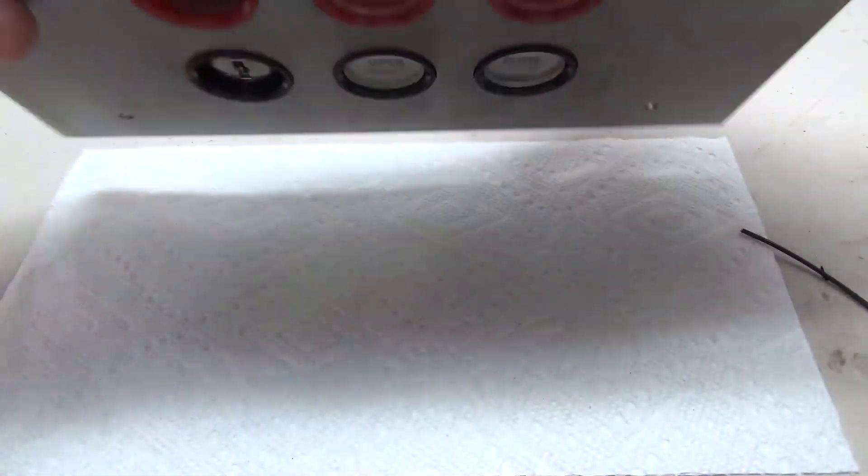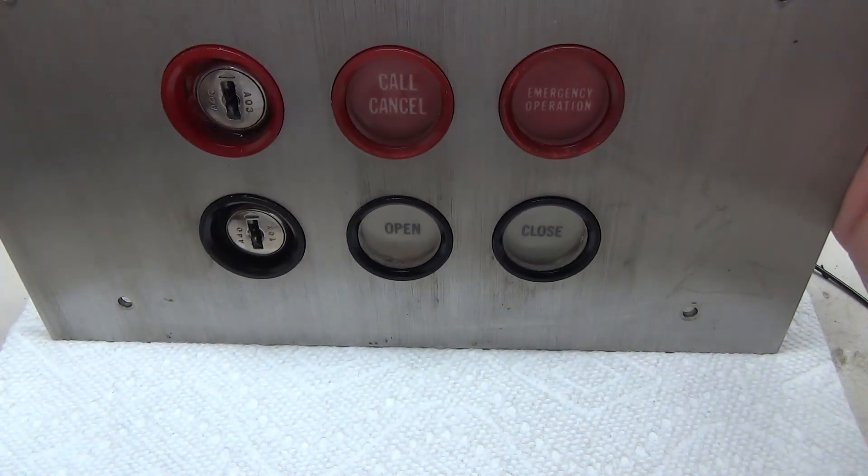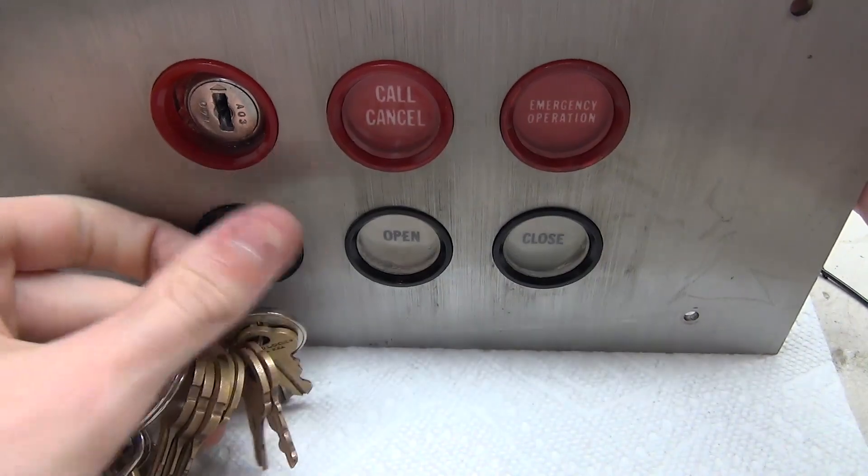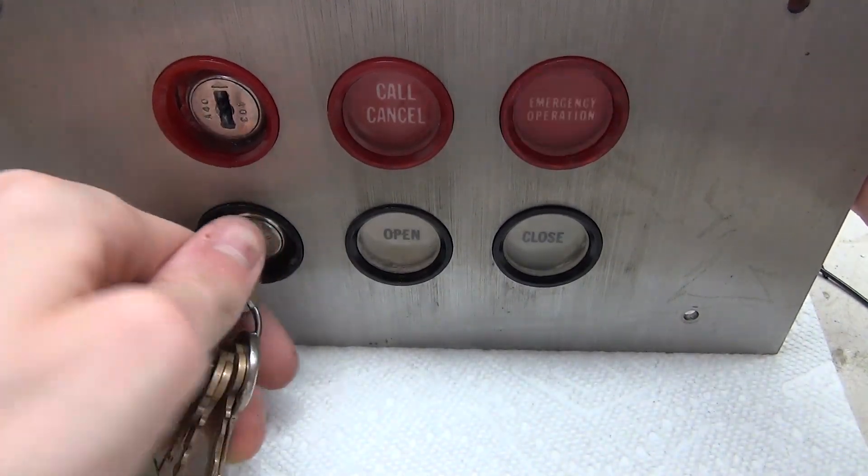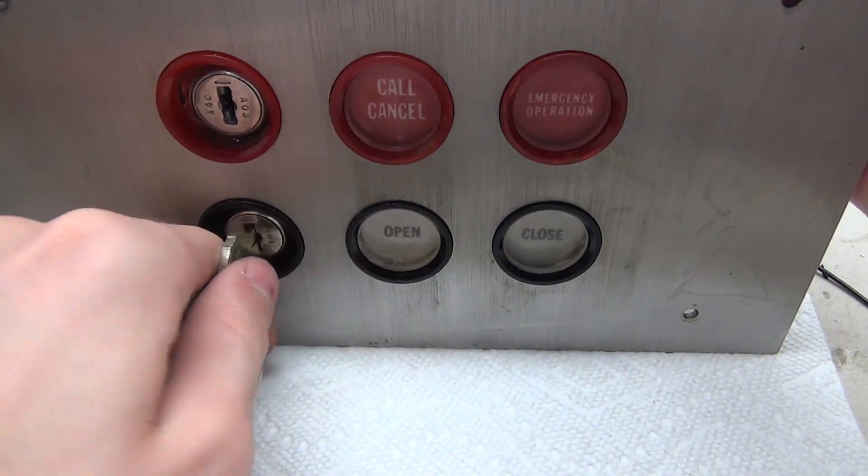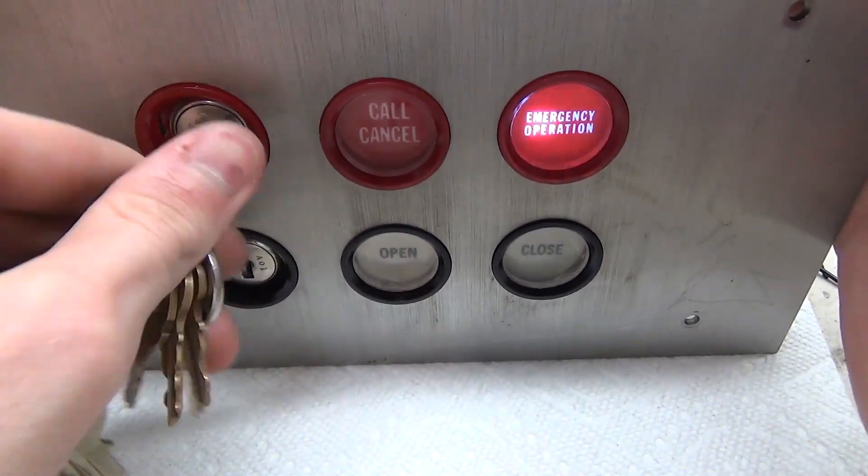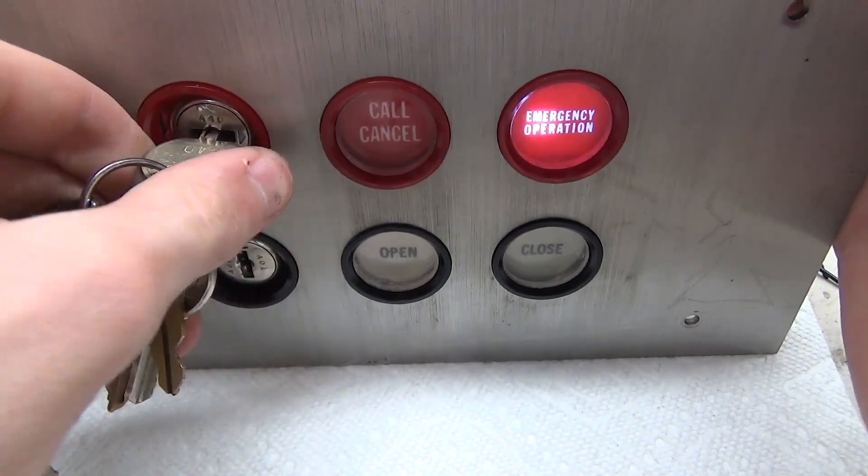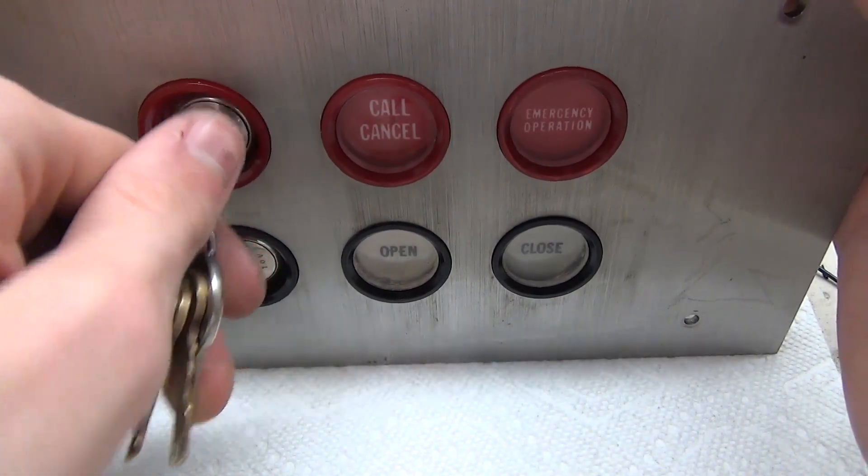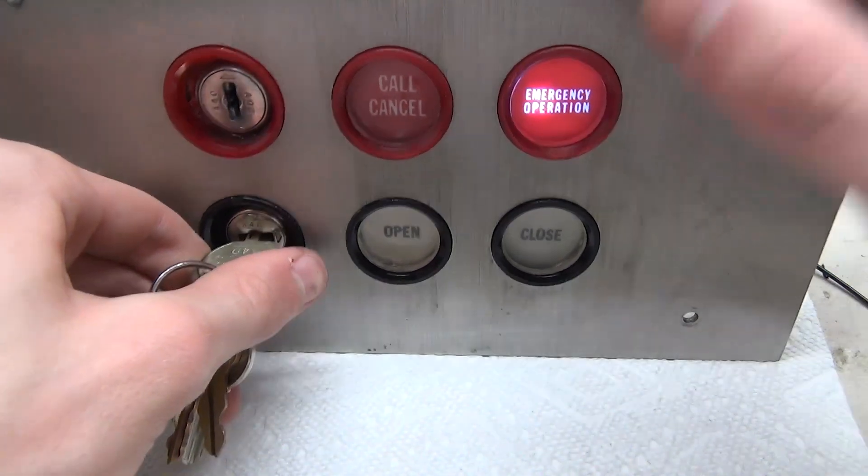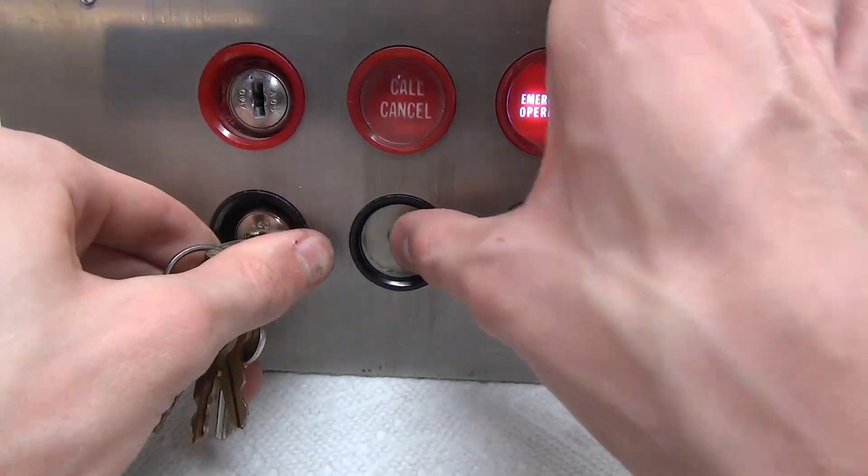All right, so we got the wiring complete here. Let's go ahead and insert our key and see what happens. There we go, emergency operation comes on just like that. And if we do this key, emergency operation comes on, exactly what I wanted. I mean eventually we could make it where these keys maybe light up some other buttons, but for now I think that looks pretty cool.